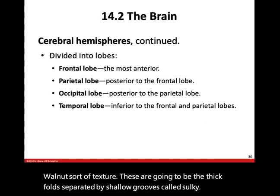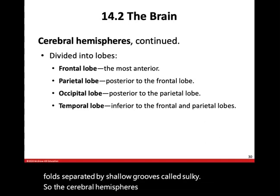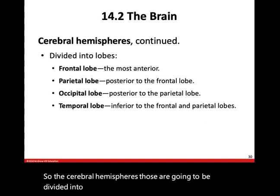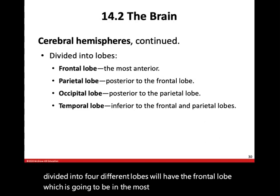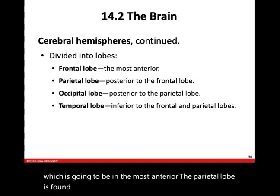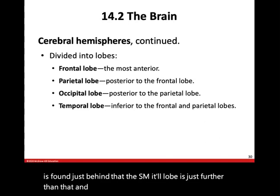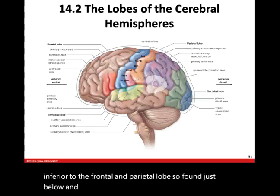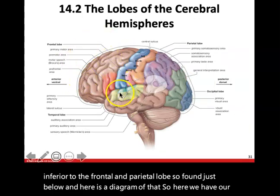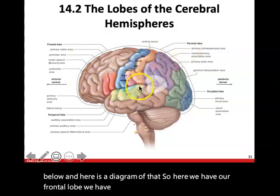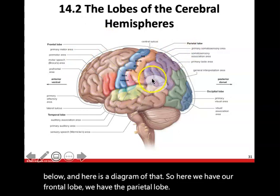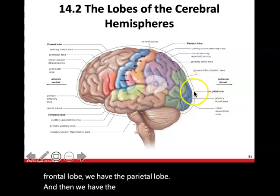The cerebral hemispheres are divided into four different lobes. The frontal lobe is the most anterior. The parietal lobe is found just behind that. The occipital lobe is further back. And the temporal lobe is inferior to the frontal and parietal lobes, found just below.